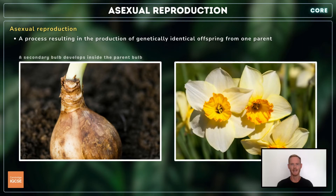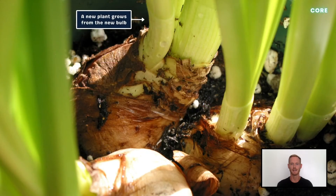In bulbs, like those of the daffodil, a secondary bud called the lateral bud develops inside the parent bulb during the growing season. During the next season, the new bulb grows into an independent plant.